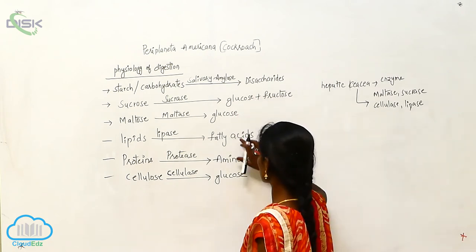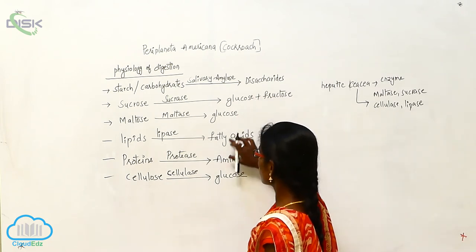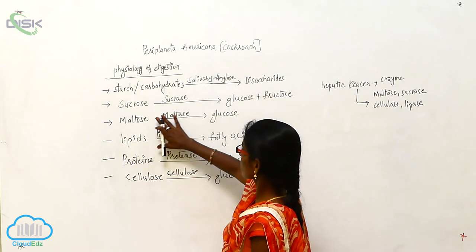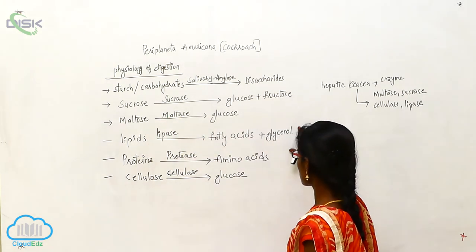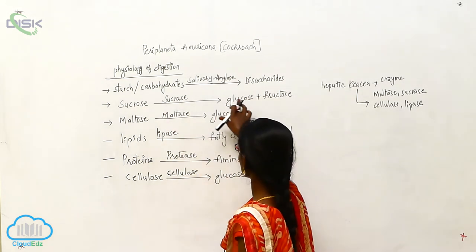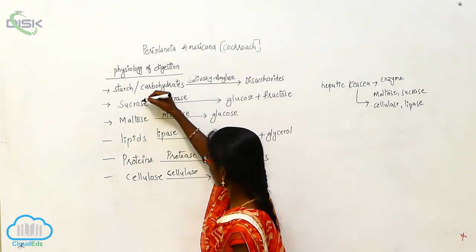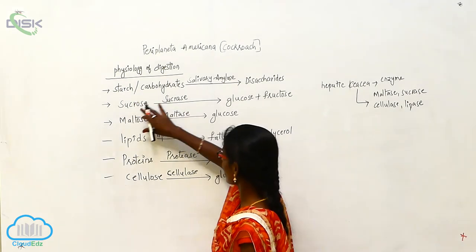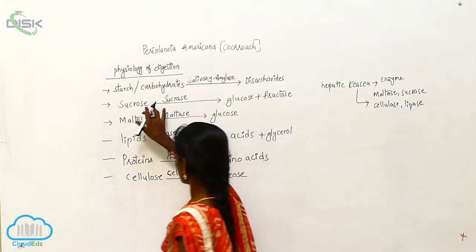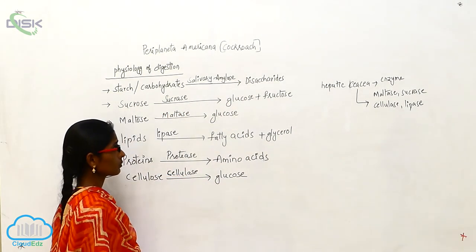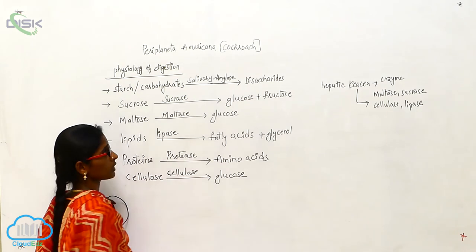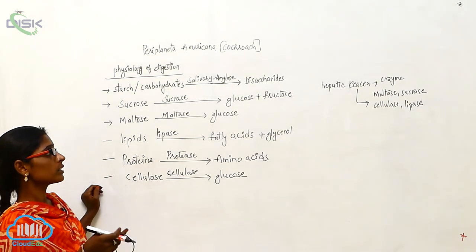The completely digested food is converted into water-soluble products. The previously insoluble compounds are converted into water-soluble products. For example, sucrose is not soluble in water, so sucrase acts on the sucrose and converts it into glucose plus fructose. That glucose and fructose will be soluble in water. This is the physiology of digestion of the cockroach.